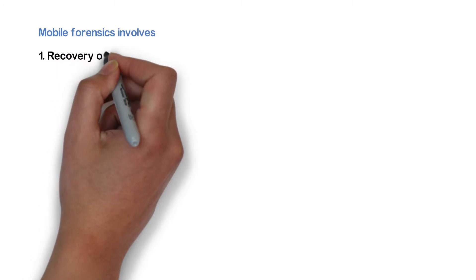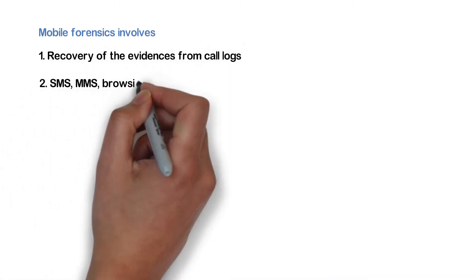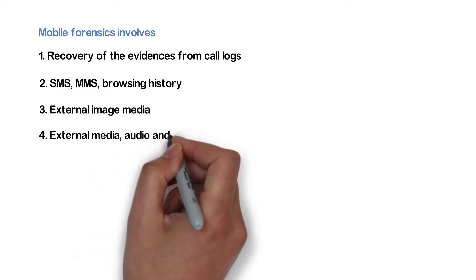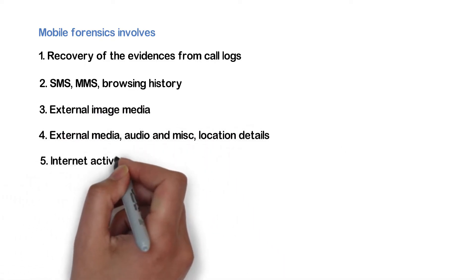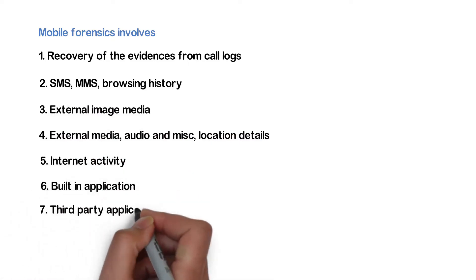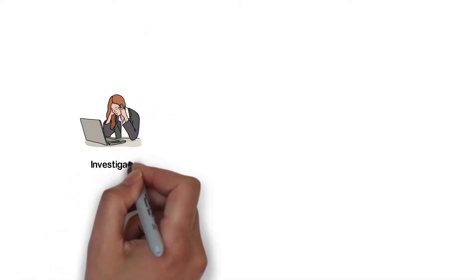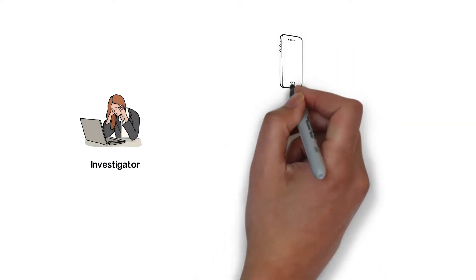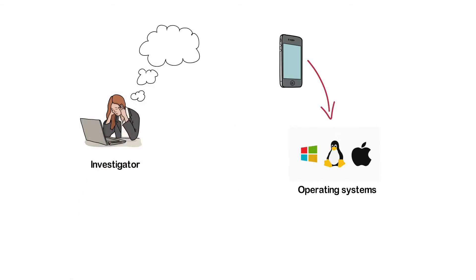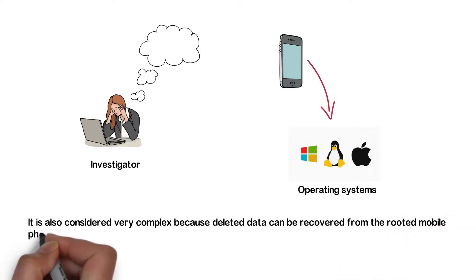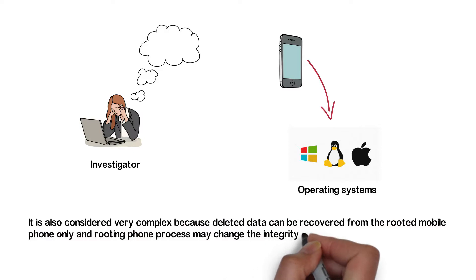Mobile forensics involves the recovery of evidence from call logs, SMS, MMS, browsing history, external image media, external media, audio and miscellaneous files, location details, internet activity, built-in applications, third-party applications, and social networking applications. It is always a challenging task because varieties of mobile phones with different operating platforms exist, and the investigator needs to work on the actual mobile phone instead of its image. It is also considered very complex because deleted data can be recovered from a rooted mobile phone only, and the rooting process may change the integrity of the evidence.